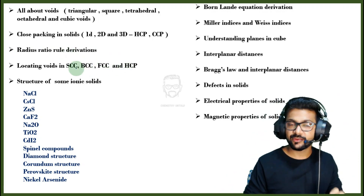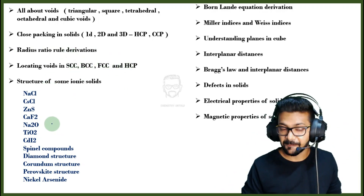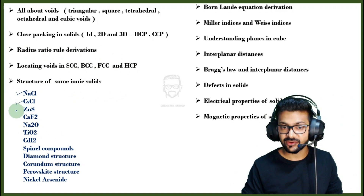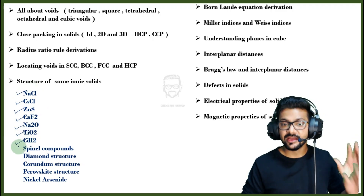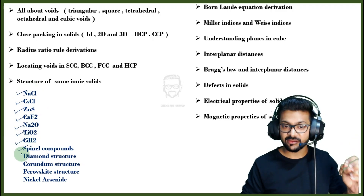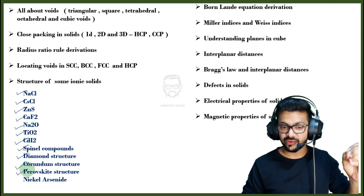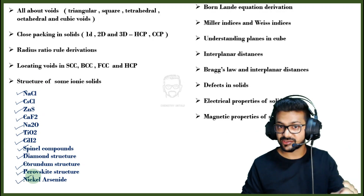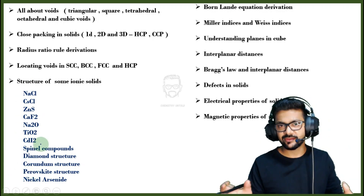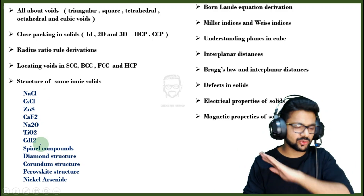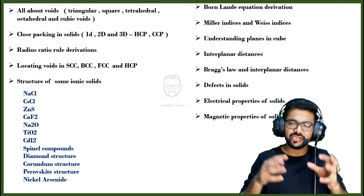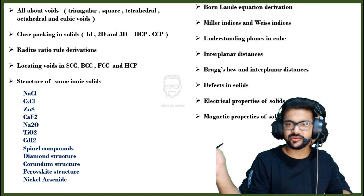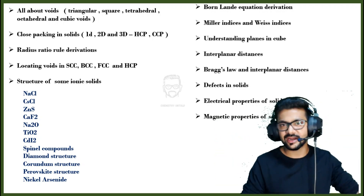The most important structures are covered — NaCl, Cesium Chloride, Zinc Sulfide, Calcium Fluoride, Sodium Oxide, Titanium Oxide, Cadmium Iodide. Also Spinel Compound, Diamond Structure, Corundum, Perovskite, and Nickel Arsenide structures. In the Basics to Advanced course, everything will be there, and higher-level content will be added over time.